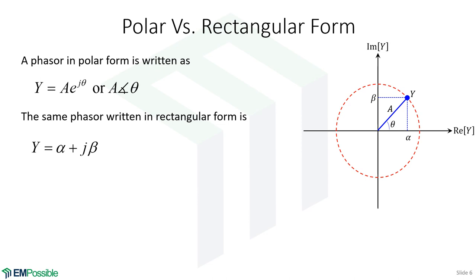A phasor can be written one of two ways: rectangular form or polar form. The polar form has a magnitude and an angle. One notation writes it as the amplitude times e to the j·theta — this is more mathematically rigorous. You can also write it as an amplitude with just the angle theta noted separately, which is sometimes more convenient. So the polar form has an amplitude (or radius) and an angle.